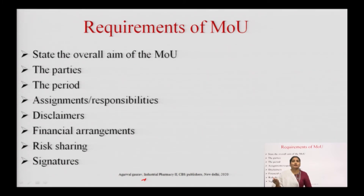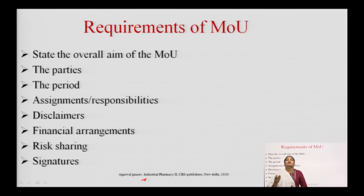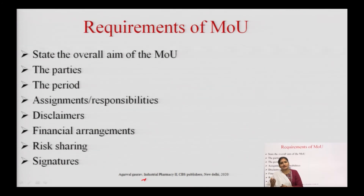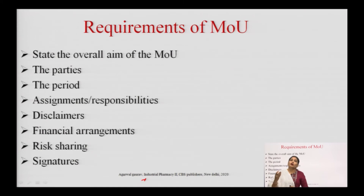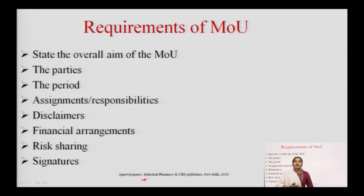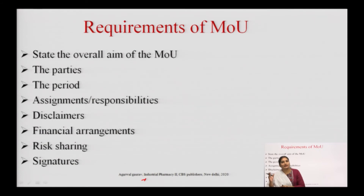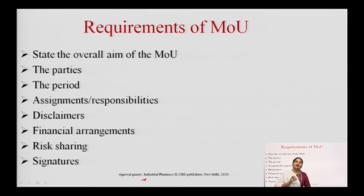As the process is related to risk and quality, there can be various risks associated with all the processes. So if there is any risk, the proportion of that risk sharing among the parties should be defined. Last, signature: the signature of both parties should be on the MOU, and the document should be authorized by both parties.